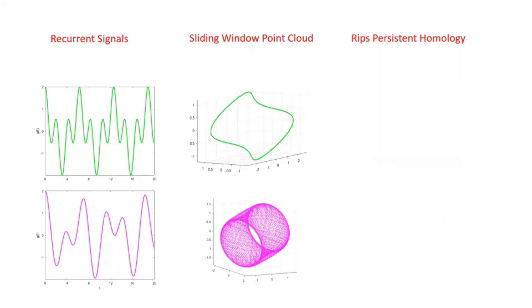Now, once we have the sliding window point clouds, we can just use the RIPPS persistent homology to actually confirm that these shapes are indeed what math promises us that they'll be. So the RIPPS persistence diagram of the first shape in green is, yeah, is going to be this. And it just tells us that there is only one one dimensional cycle. And that tells us that the shape is essentially a topological circle.